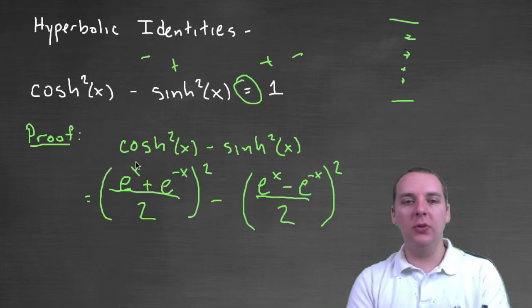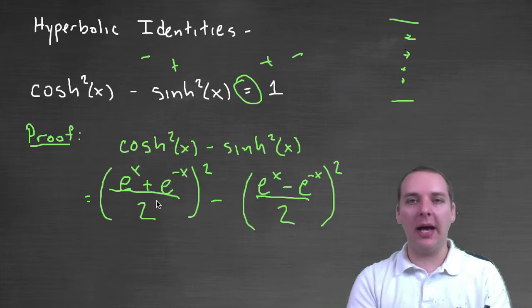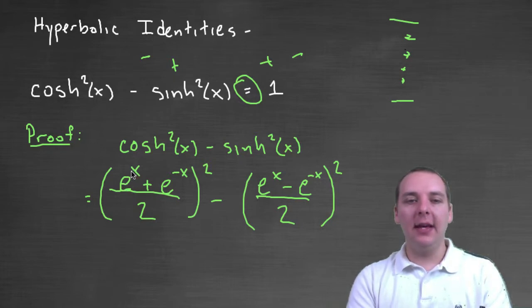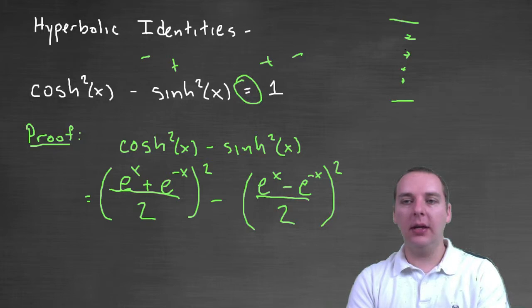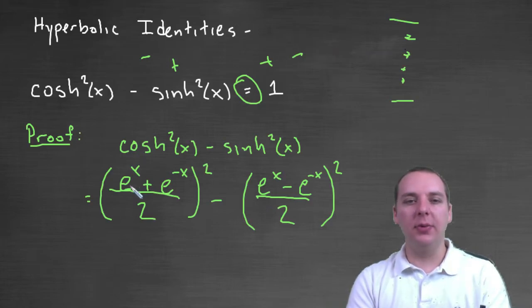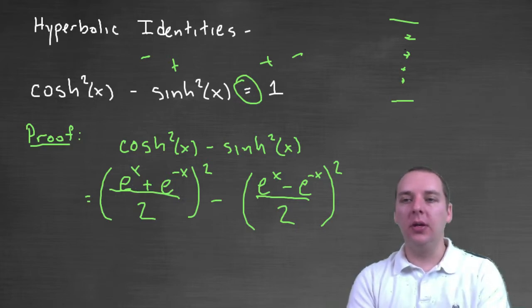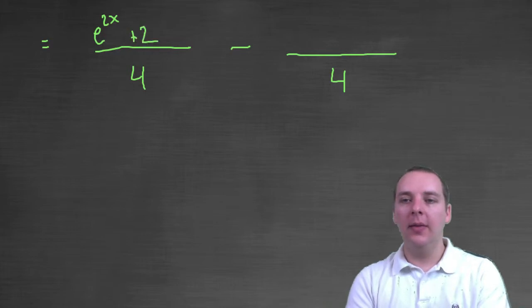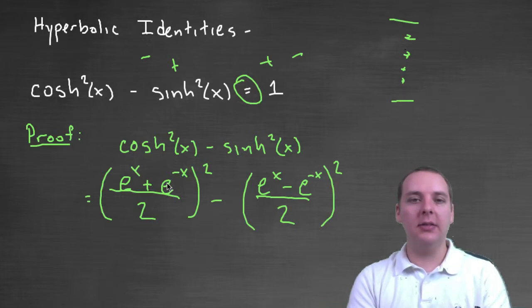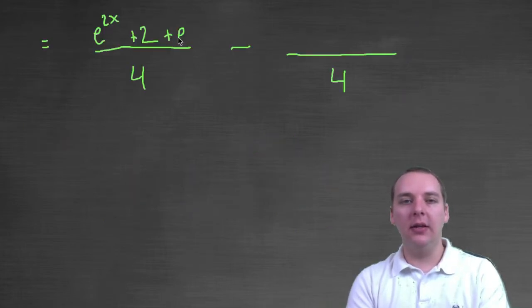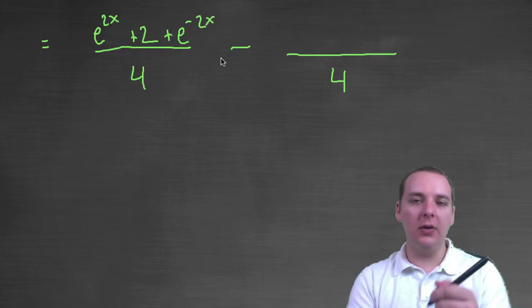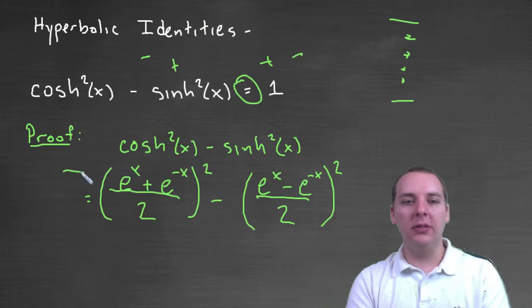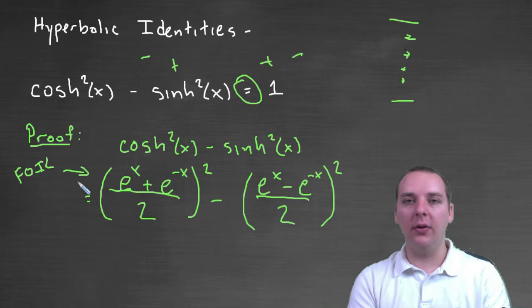So what happens when I square this numerator? Well, we'll need to foil it, first, outer, inner, last, as we well know. So you get e to the x quantity squared, that would be e to the two x. The outer and inner would be e to the x times e to the negative x, which is e to the zero, which is one. And the inner would be one. So you get one and one makes plus two. And then for the last, you get e to the negative x times e to the negative x. That would make e to the negative two x. So I didn't write down every detail, but basically all I did was this numerator here. I just foiled it, first, outer, inner, last.